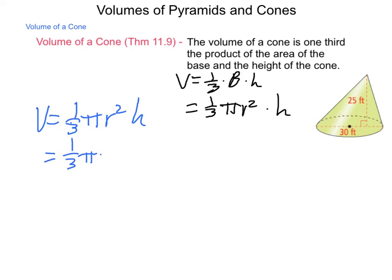So, it's one-third pi times 15 squared times the height of 25 feet. Well, 15 squared is 225, and we multiply that by 25.